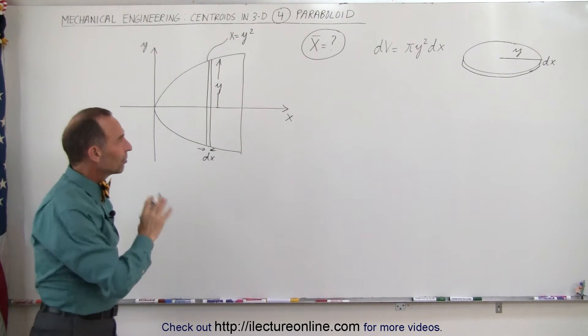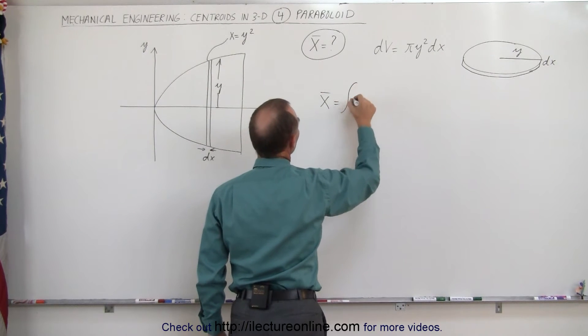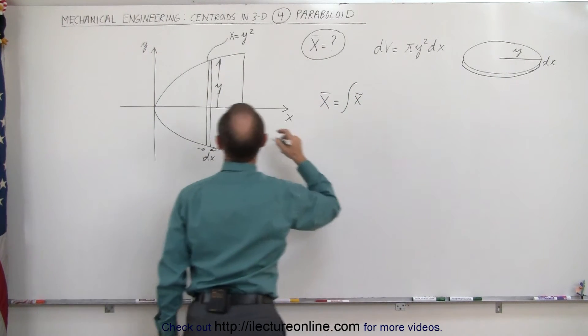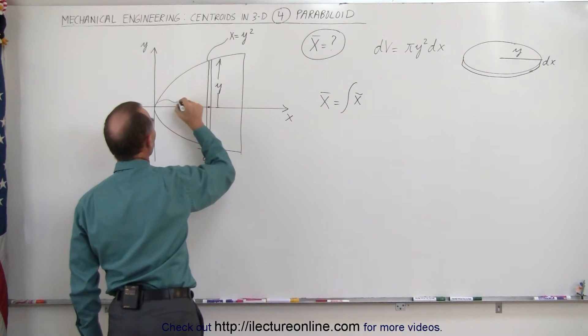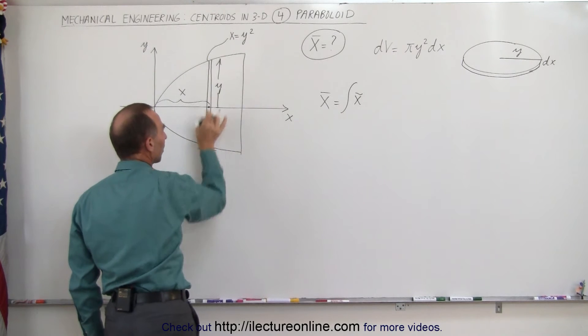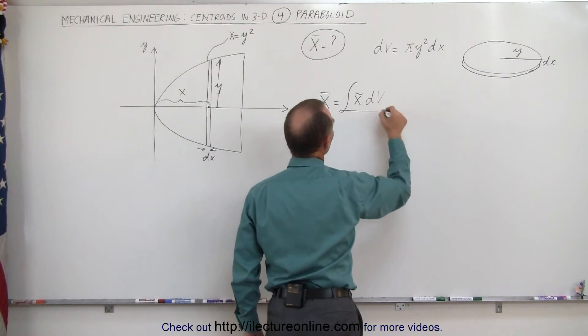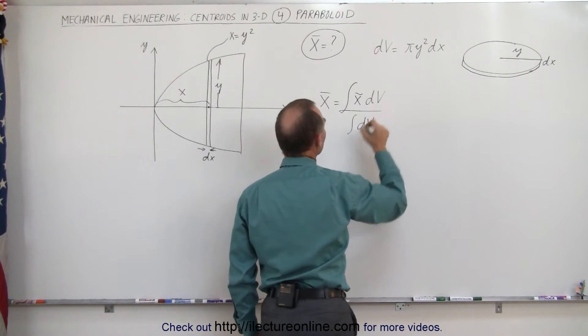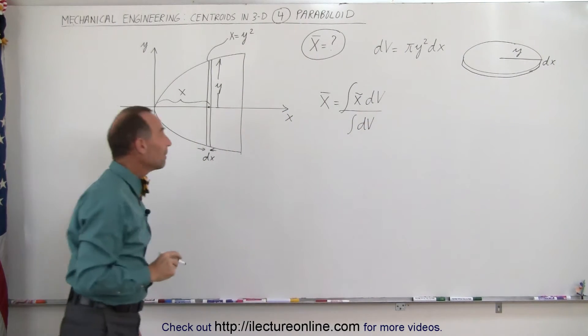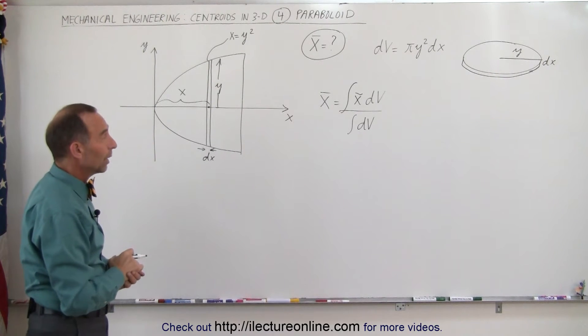The equation to find the centroid is as follows. The x-coordinate of the centroid is equal to the integral of the x-coordinate of the small little slice - that would be this distance right here, the distance x away from the origin. That's the centroid. There's a small little slice. We multiply that times the dv, and divide the whole thing by the integral of the dv. Now in this case, we may not know what the volume is, so we'll probably have to find the denominator as well.